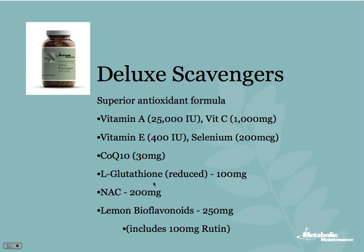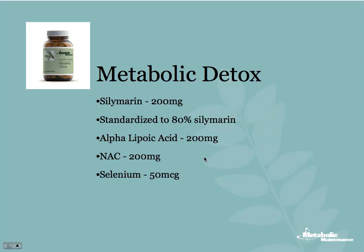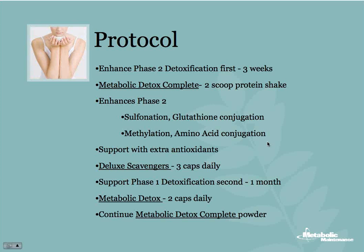Here is what I do with my patients. First, enhance phase 2 detoxification. For three weeks, give the Metabolic Detox Complete — two scoops of the protein shake — which enhances all that phase 2 detox: sulfur groups, methyl groups, glutathione, amino acids, et cetera. I also support with extra antioxidants: three caps of the Deluxe Scavengers. Then I switch to add on supporting phase 1 detox using Metabolic Detox. Some patients I'll stop phase 2 and just do phase 1; some patients I'll do it all, depending on how toxic they are. For a preventive patient, I alternate the Detox Complete and the Detox, but for toxic patients, start with the powder for three weeks, then do everything.